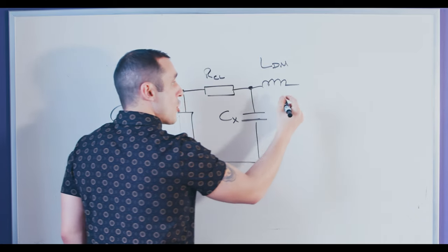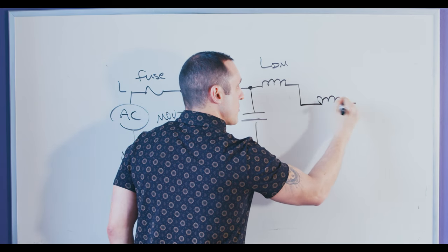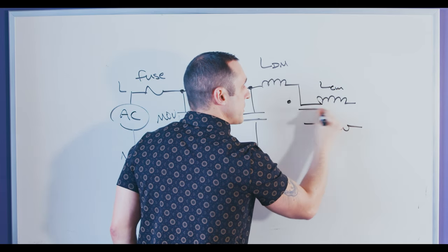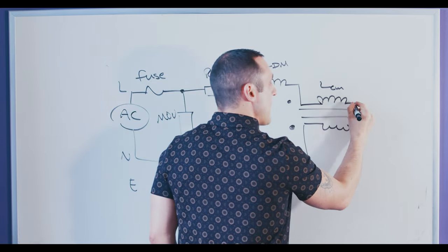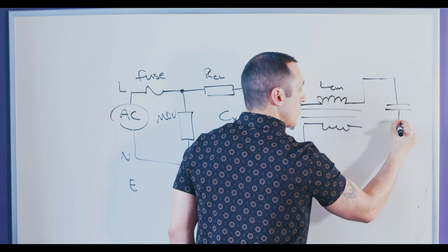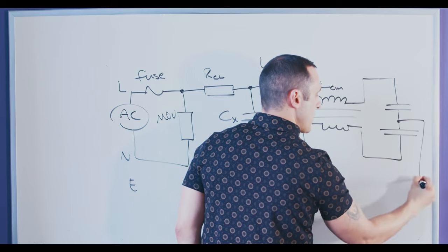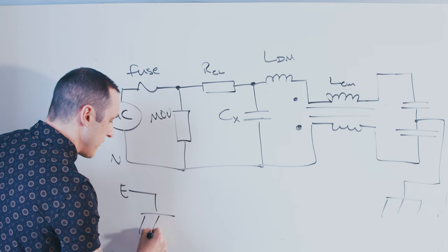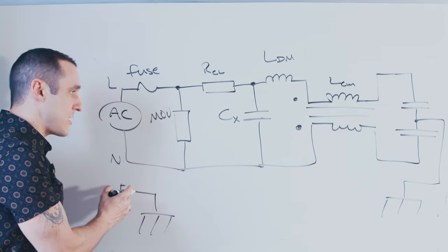After the differential mode choke, we can start looking at common mode noise. One way to do that is with a common mode choke right here — I'm drawing two coupled inductors with polarity marked to indicate it is a common mode choke. After this, you may see a couple of Y capacitors which further filter out the common mode noise, and this is where you get back to your earth or chassis connection.